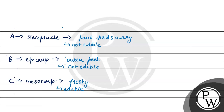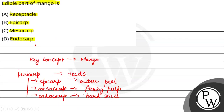Option D is endocarp. Endocarp is the innermost layer of pericarp. In mango, the endocarp forms a hard shell-like structure because mango comes under the category of drupe fruits, and it encloses the seed. Therefore, the answer to this question is option C, mesocarp.